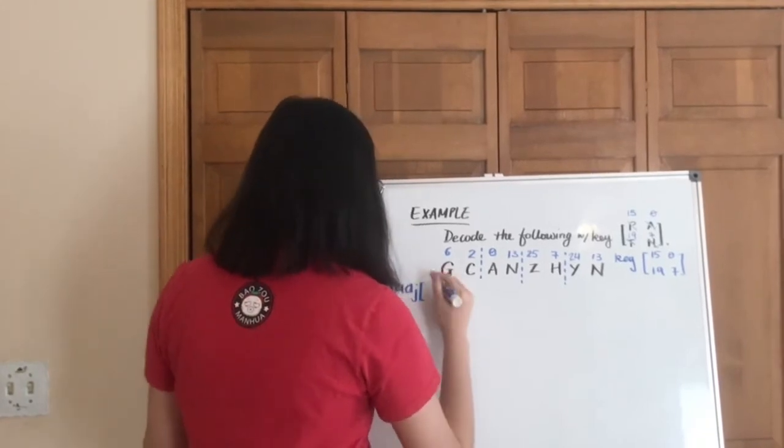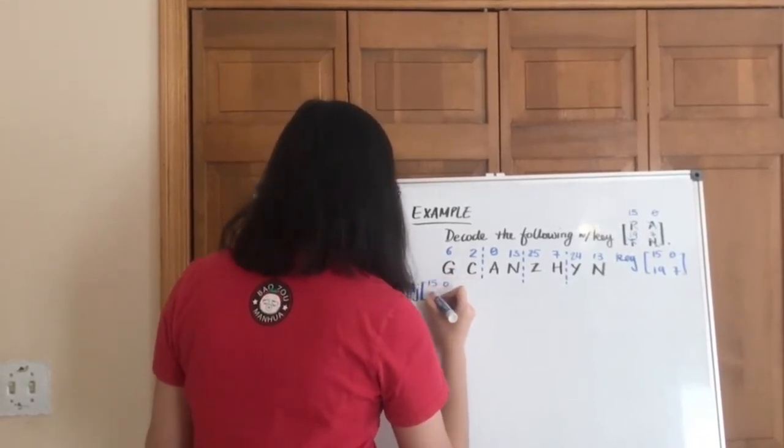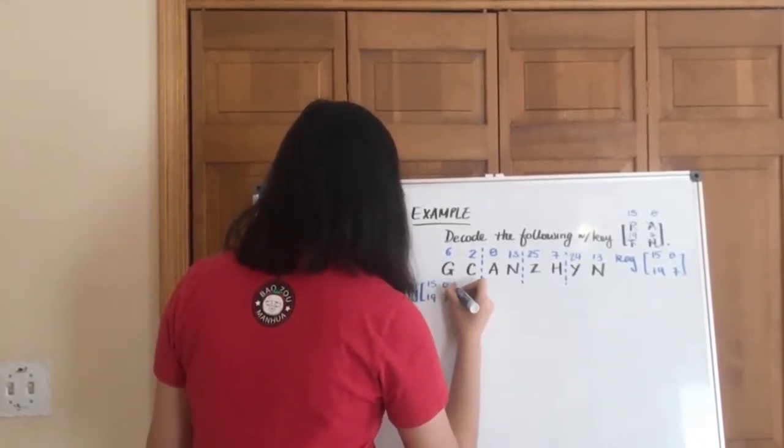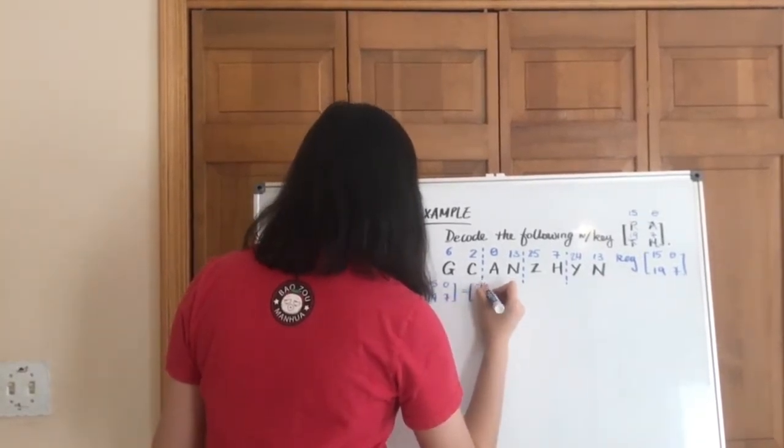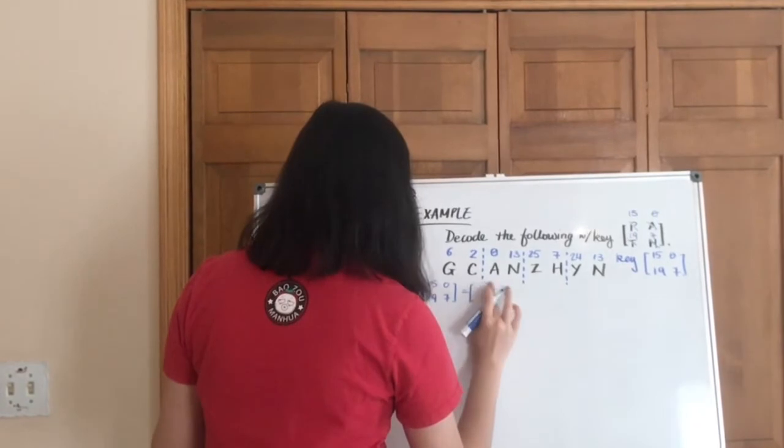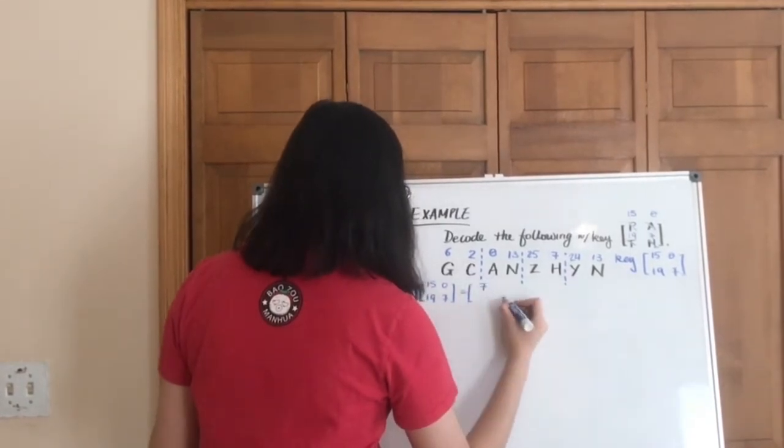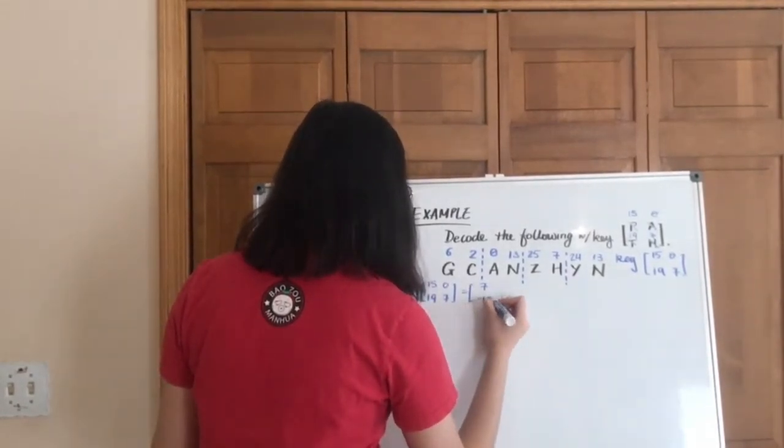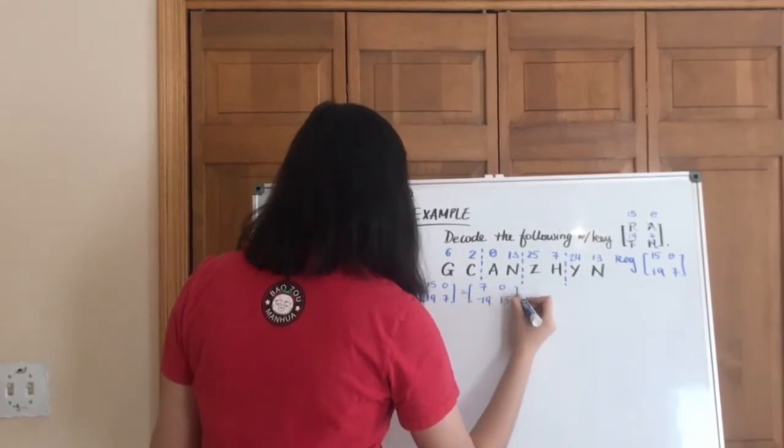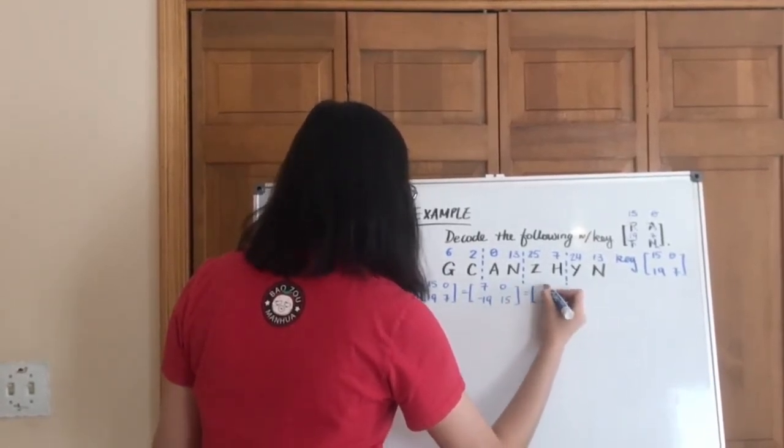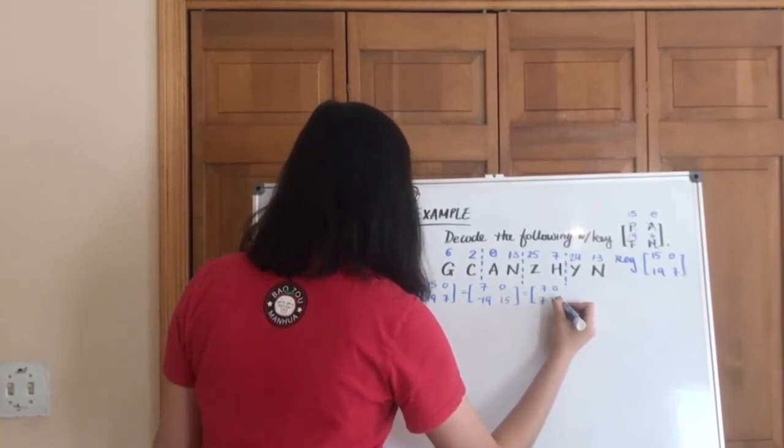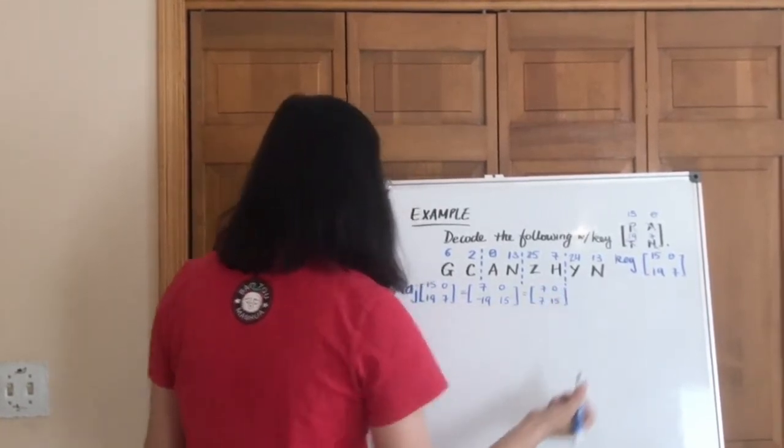Adjoint of this big boy is going to be, sorry, 7, 0, negative 19, and 15. And we are going to transfer that into mod 26 right away. 7, 0, 7, 15. Cool.